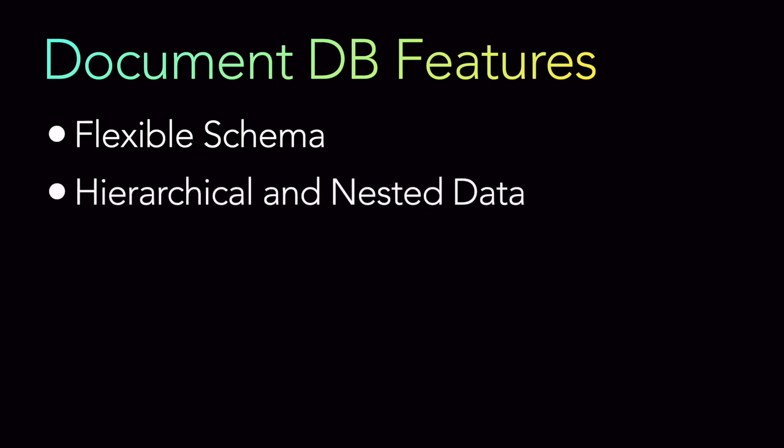The second feature is hierarchical and nested data. Documents can contain nested sub-documents, arrays, or lists, which enables easy representation of complex relationships between data elements. This is a bit difficult in relational databases where you might have to stringify data or store a blob, but in document databases you can natively store nested structures, sub-documents, arrays, and lists.